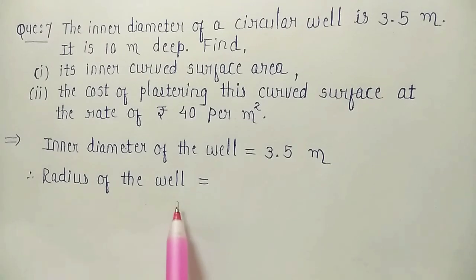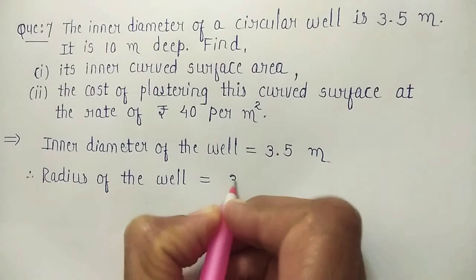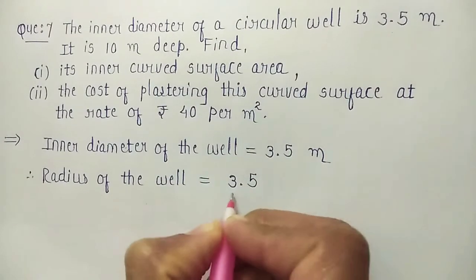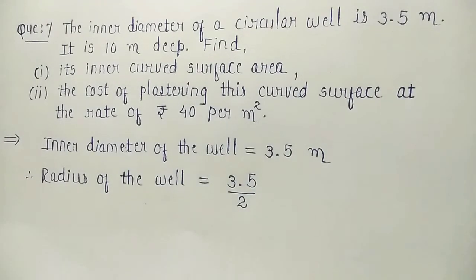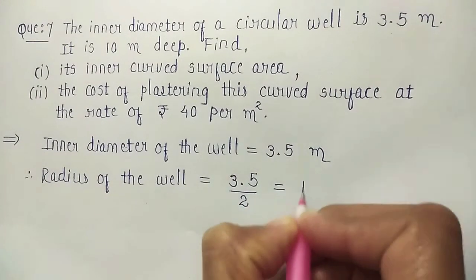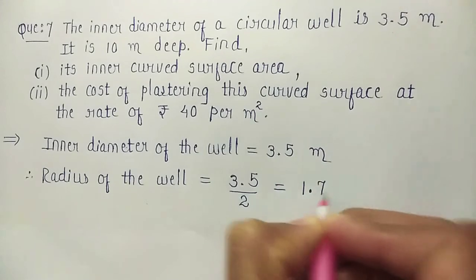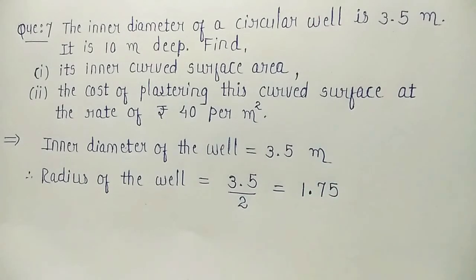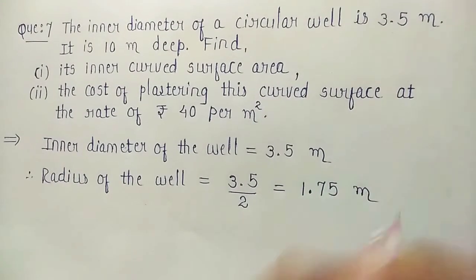radius of the well, which is in the form of cylinder, so what will be R? It is diameter divided by 2. So, 3.5 divided by 2, that is 1.75. What will be unit? Meter.